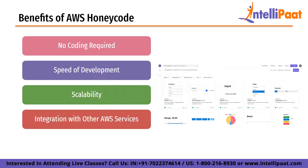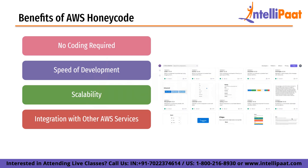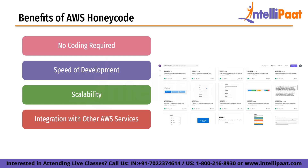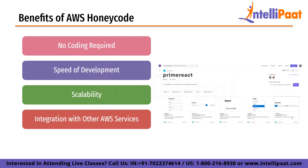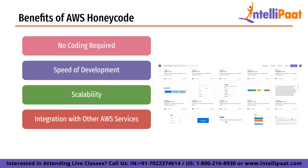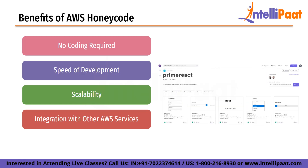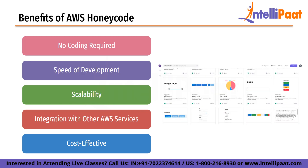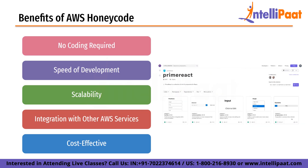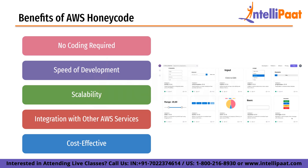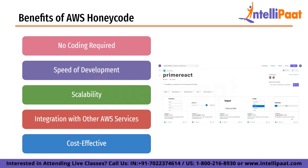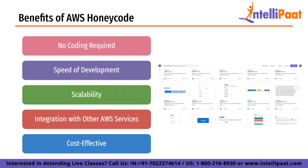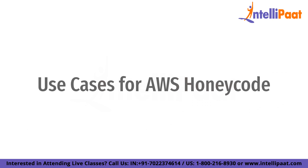Next is integration with other AWS services. Honeycode integrates seamlessly with other AWS services such as DynamoDB, Lambda, and S3, allowing developers to create more complex apps that leverage the power of those services. And finally, it is cost-effective. Because Honeycode requires no coding knowledge, businesses can save money on hiring developers or buying expensive software licenses. Additionally, Honeycode pricing is based on usage, meaning that businesses only pay for what they use.